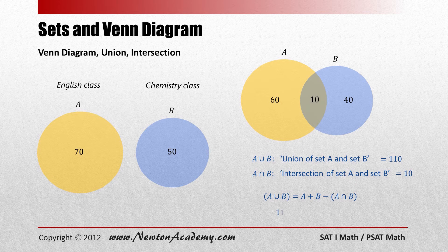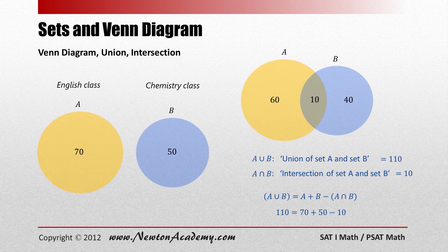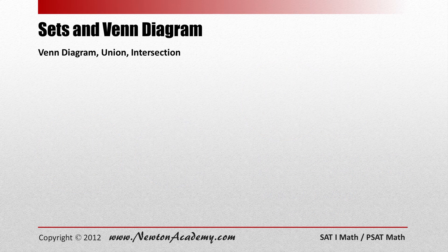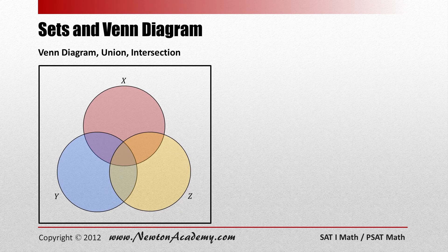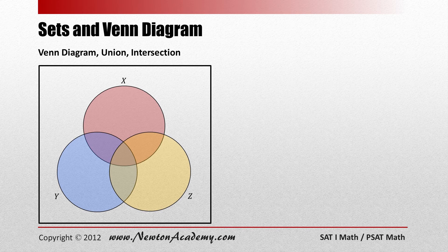It will help your understanding more if you plug in numbers. This pictorial representation of sets using circles, sometimes with an enclosing rectangle, is called a Venn diagram. A Venn diagram is a diagram representing mathematical or logical sets pictorially as circles within an enclosing rectangle. Now let's look at a Venn diagram with three sets — X, Y, and Z — that overlap.